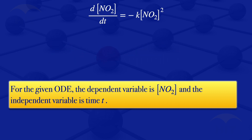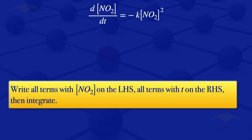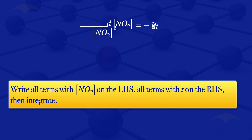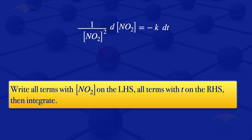So I'll write all the terms which have the concentration of nitrogen dioxide on the left-hand side, and terms which have T on the right-hand side, then go on and integrate. Separating the variables, we have the concentration of nitrogen dioxide on the left, and the constant K and dT on the right-hand side.